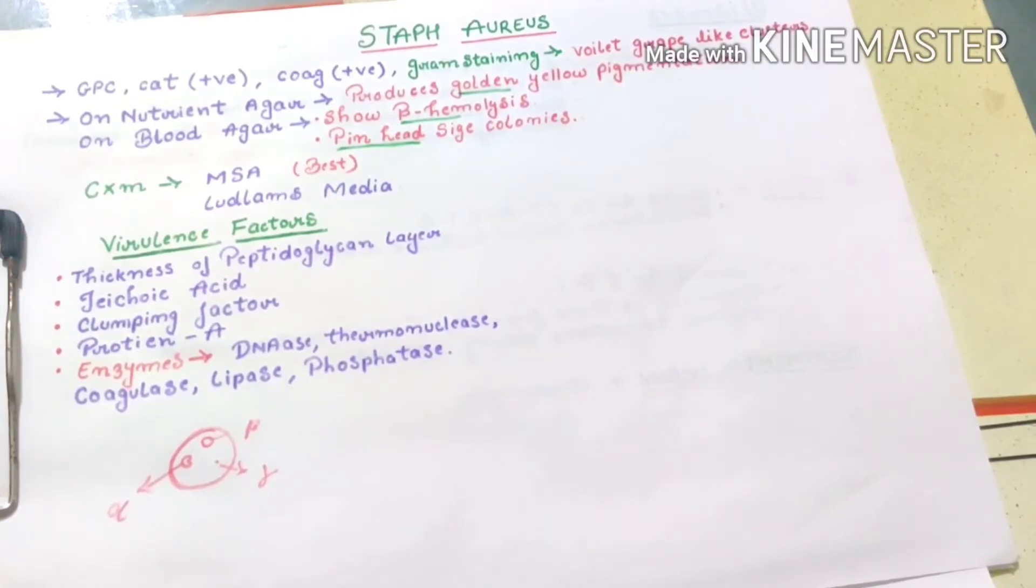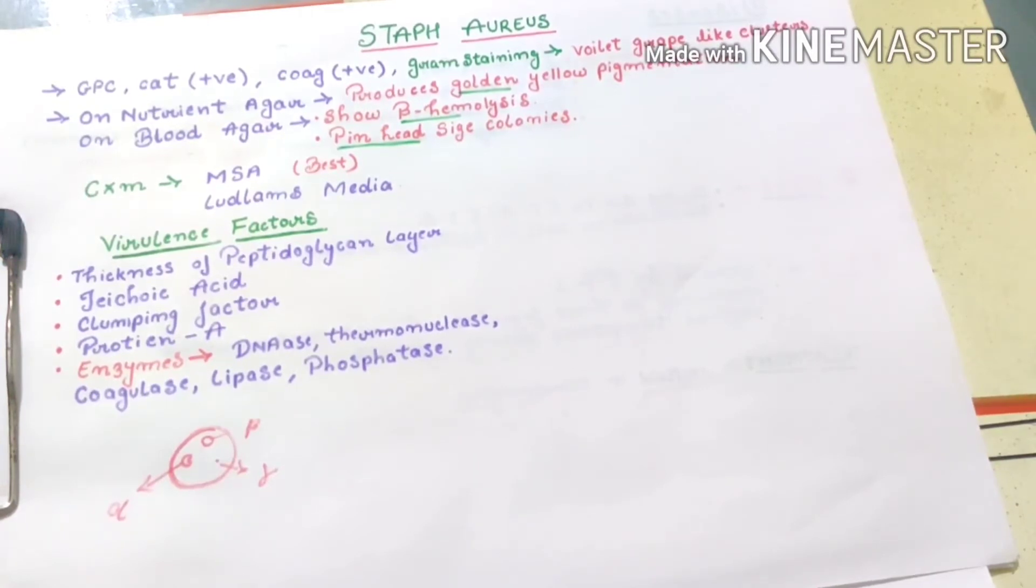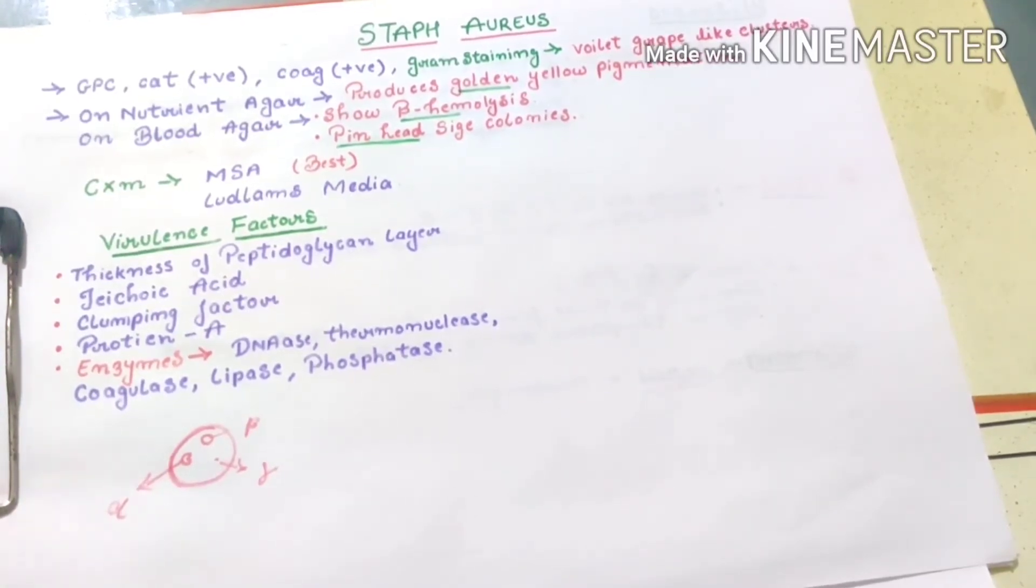Then we will talk about virulence factors. Virulence factor means factors that increase the pathogenicity of that particular organism. First, the virulence factor is thickness of peptidoglycan layer, second is teichoic acid, third is clumping factor, and fourth is protein A.